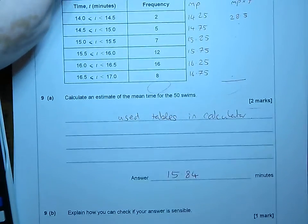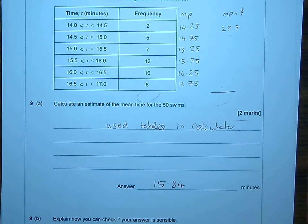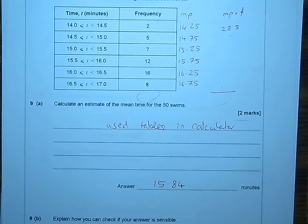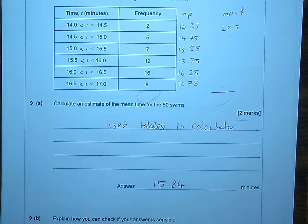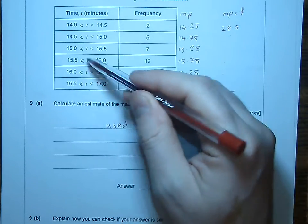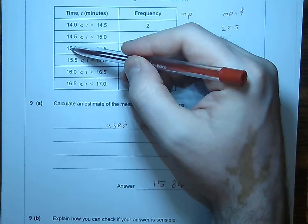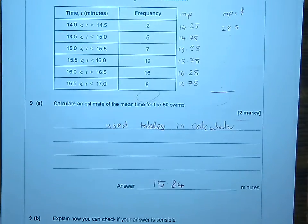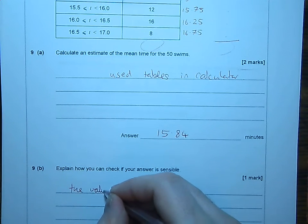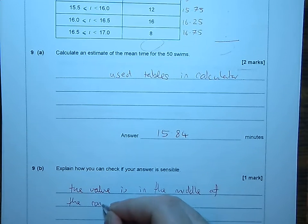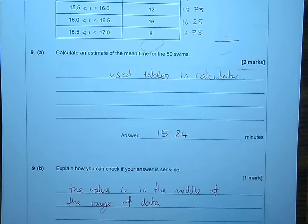Explain how you can check if your answer is sensible. Well, how can I check if it's sensible? Let's have a look. Sometimes he swam it in 14 and a bit minutes. Sometimes he did it in 16 and a bit minutes, and somewhere in between. If my answer was 20 minutes, is that even possible, considering it's more than the highest? Even more clearly, we can see that most of his times are sort of somewhere around about here. Generally speaking, the middle, 15.84, that's like 15, 16. It's kind of in the middle, isn't it? The value is in the middle of the range of data.